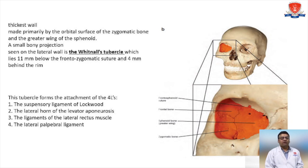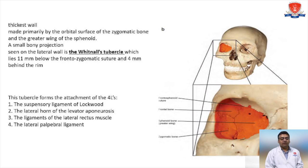A small bony projection seen on the lateral wall is the Whitnall's tubercle, which is 11 mm below the frontal-zygomatic suture and 4 mm behind the rim. This tubercle forms the attachment of the lateral canthal ligament, the suspensory ligament of Lockwood, the lateral horn of the levator aponeurosis, and the check ligament of the lateral rectus muscle, as well as the lateral palpebral ligament.